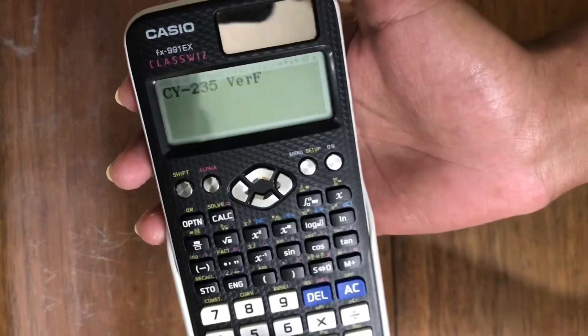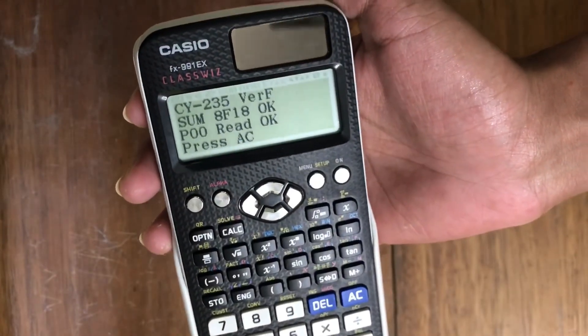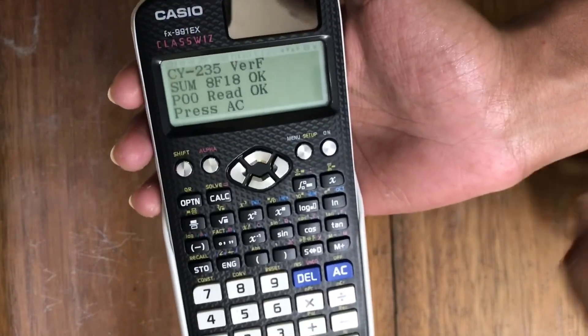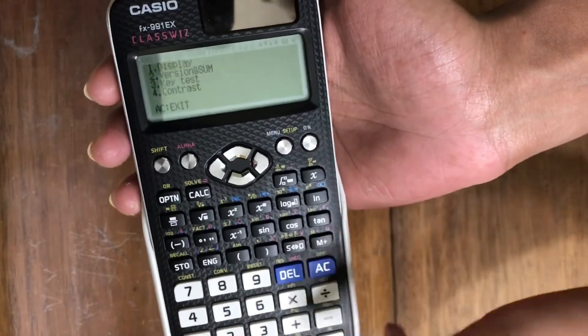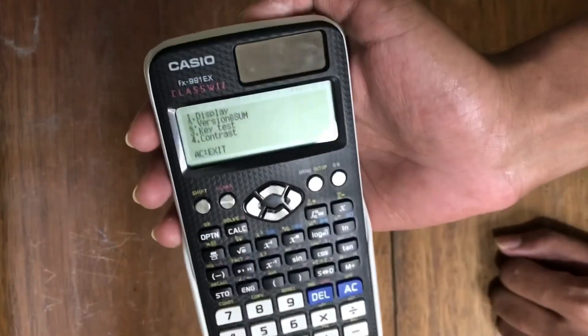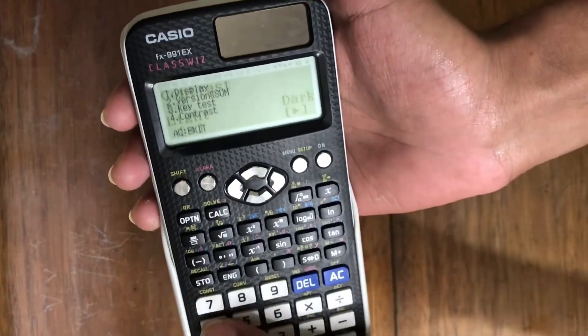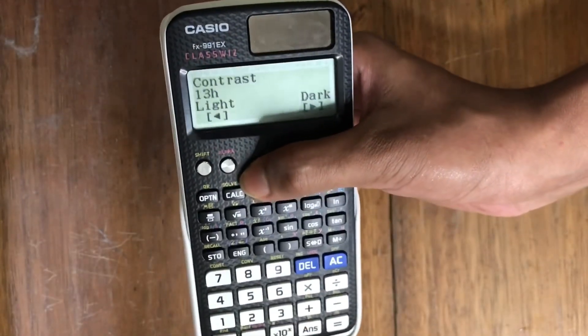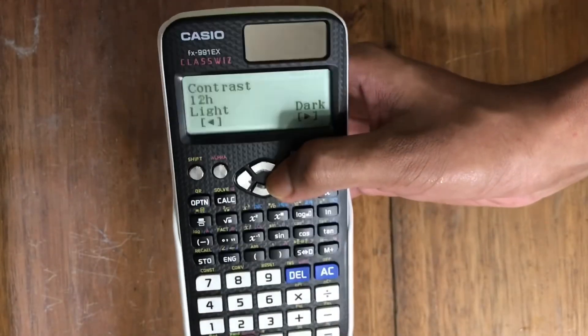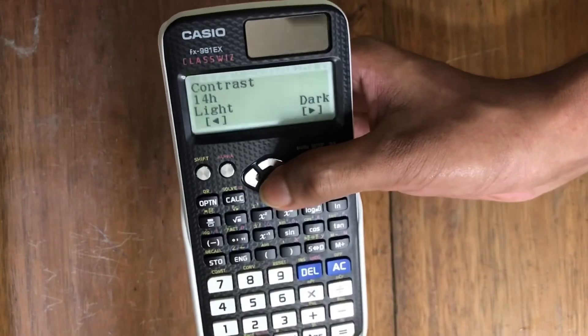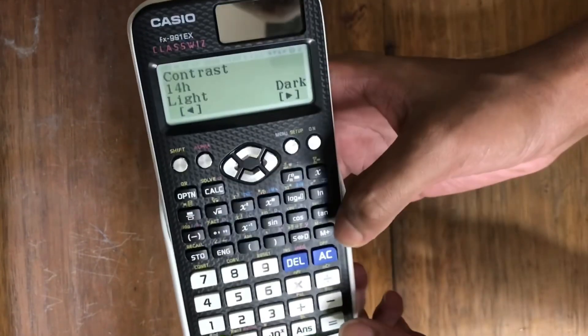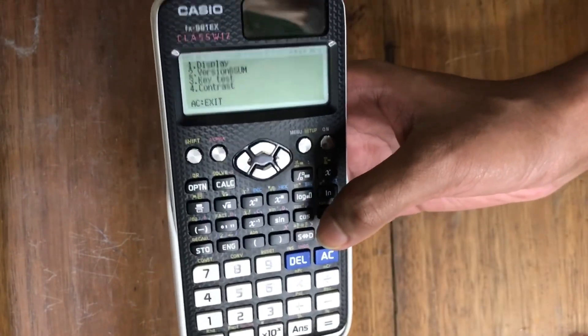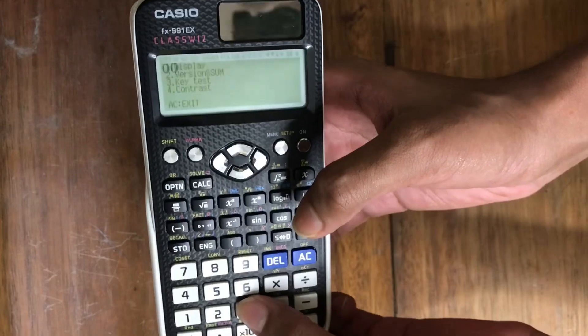We've come to the menu by pressing shift. Then we'll check version. Here we can see a version, but in the fake one there will be no version. Now we go back. Then we'll test contrast. Here we can brighten our calculator display or lower it by clicking this way.